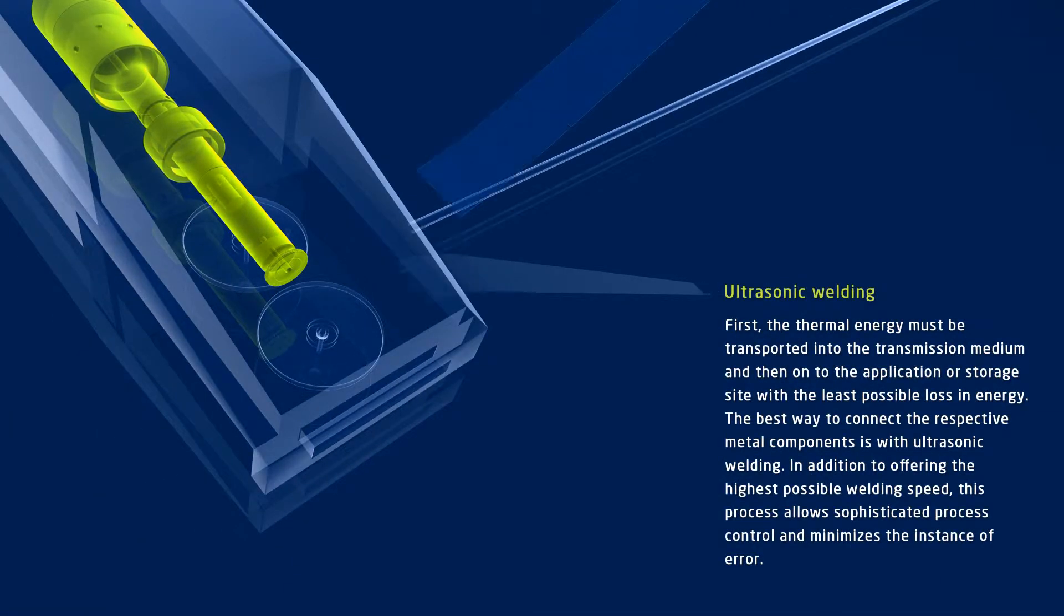When solar collectors are used, solar radiation must first be transported to the transmission medium before it is moved to the application or storage site. Most often the generated heat is not used in the location where it is produced.